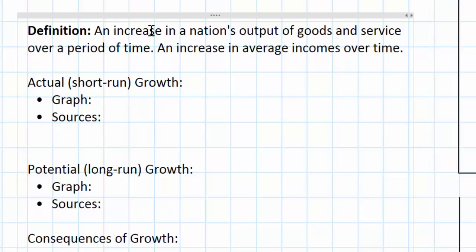In previous lessons we've distinguished between the income and the output approach to measuring GDP, so there's actually no difference when referring to GDP growth as an increase in output or an increase in income. In this lesson we'll distinguish between short-run economic growth, sometimes called actual growth, and long-run economic growth, sometimes referred to as potential growth.